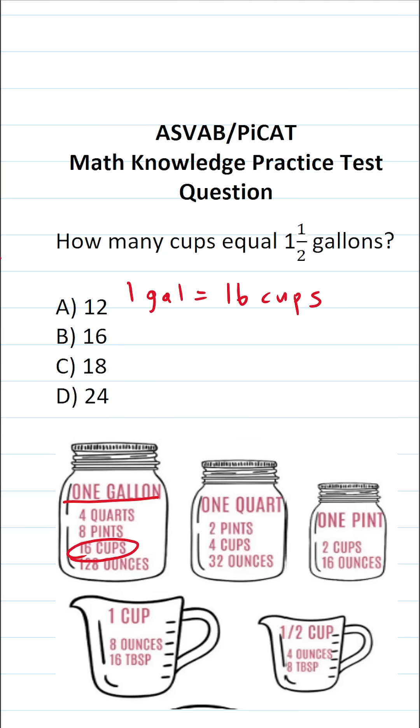And again, on the ASVAB and PiCAT, you're not given a reference sheet or a calculator. You do have to commit some of these basic conversions to memory at some point.